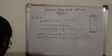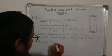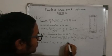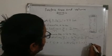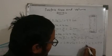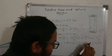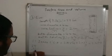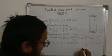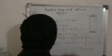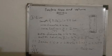Number one: inner CSA of cylinder = 2πrh. Put the values: 2 × (22/7) × 2 × 77. You can cut 77 by 7 to get 11. So 2 × 22 × 2 × 11 = 44 × 22 = 968. Wait — 2 × 22 = 44, 44 × 2 = 88, 88 × 11 = 968. Inner CSA = 968 centimeter square.